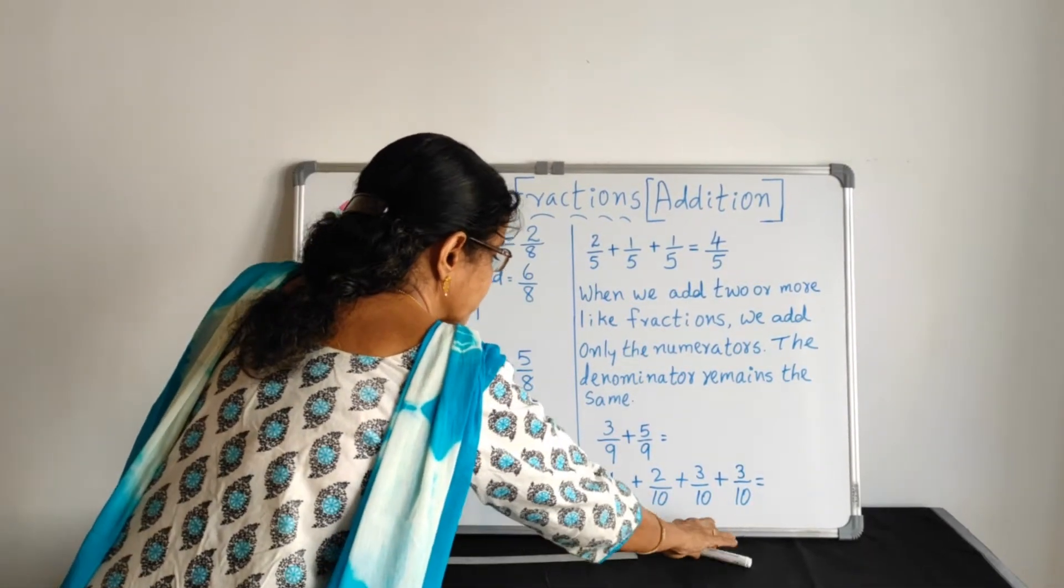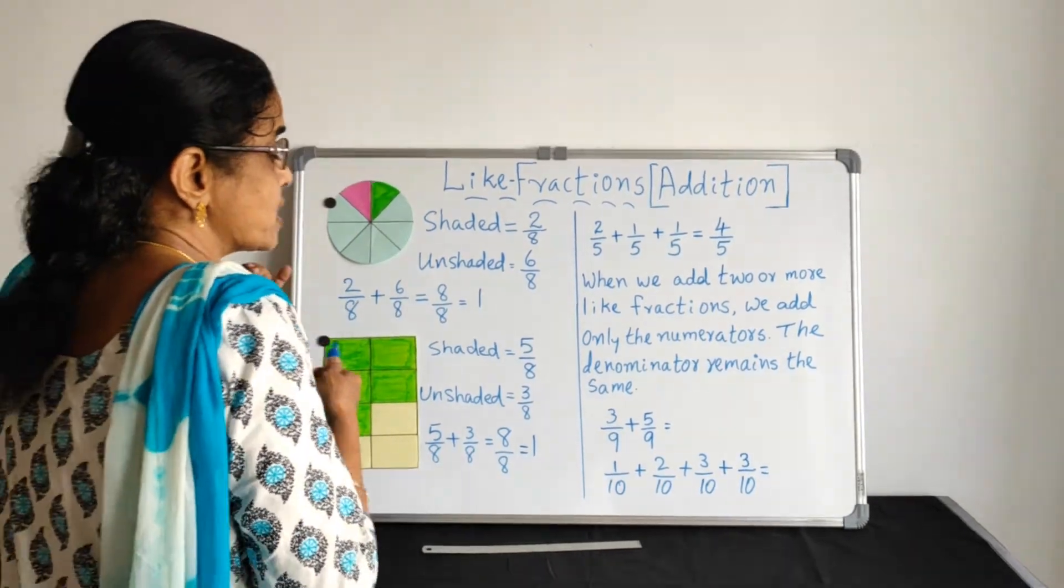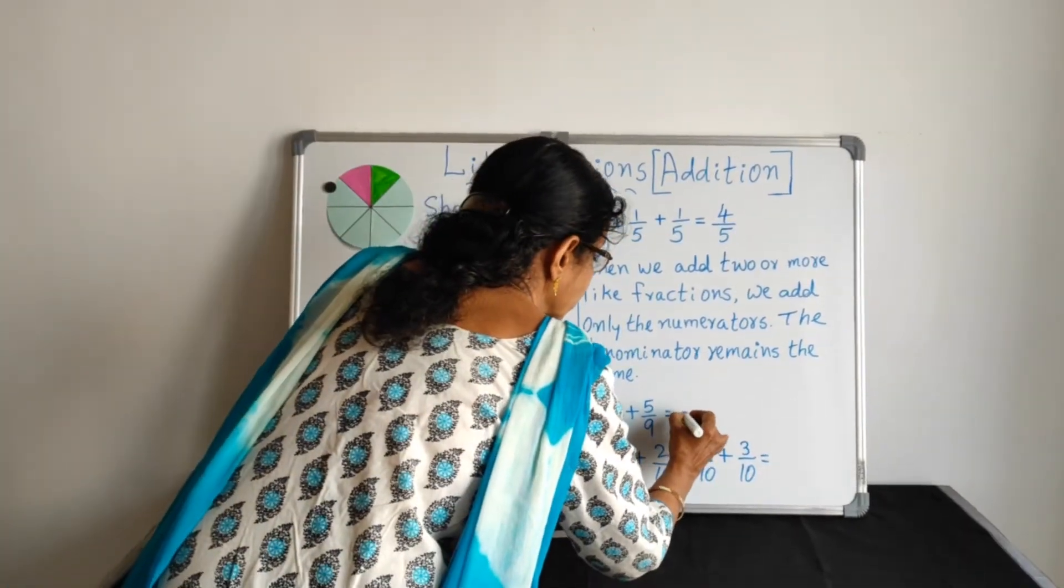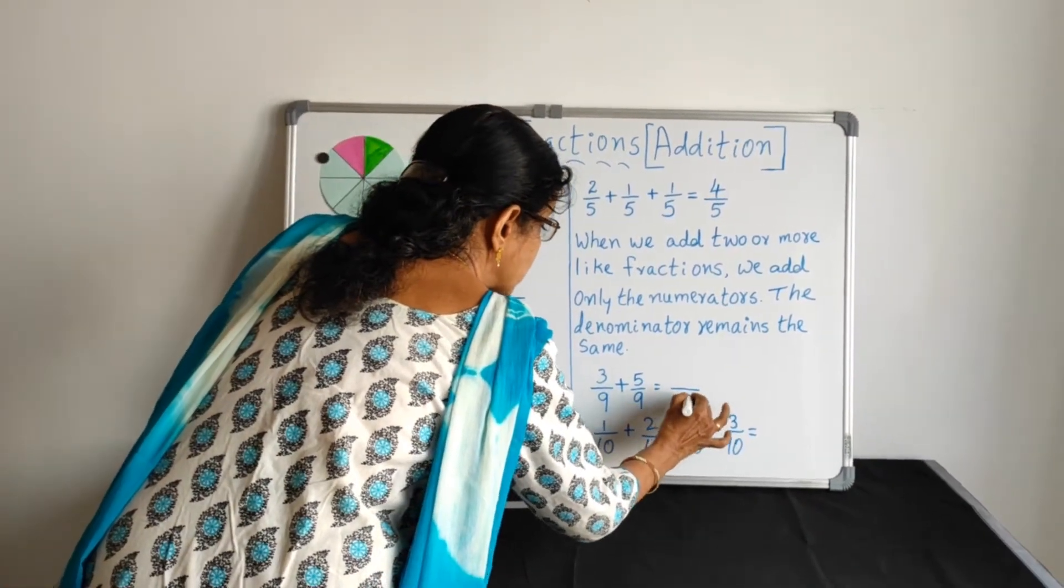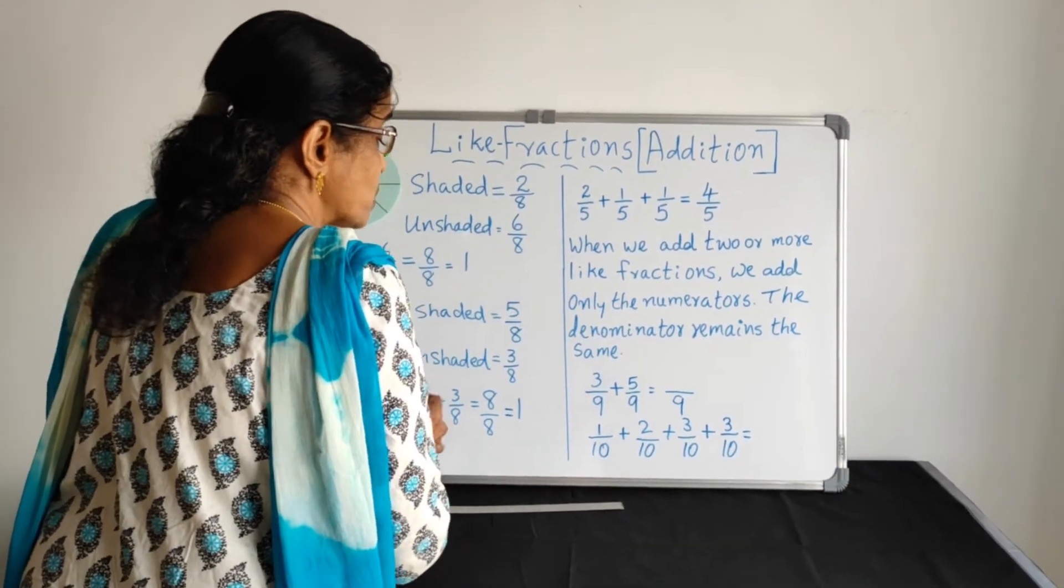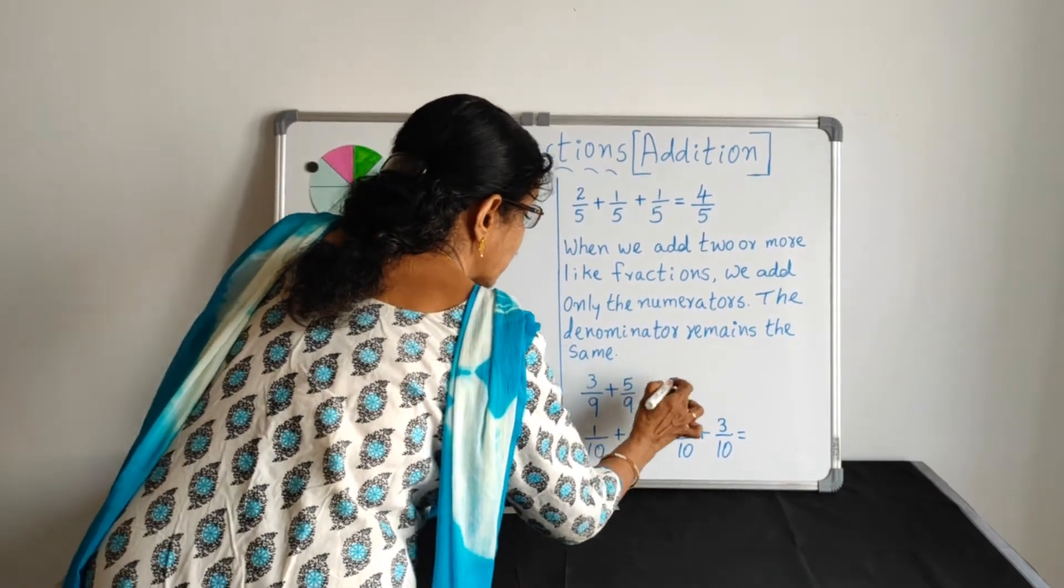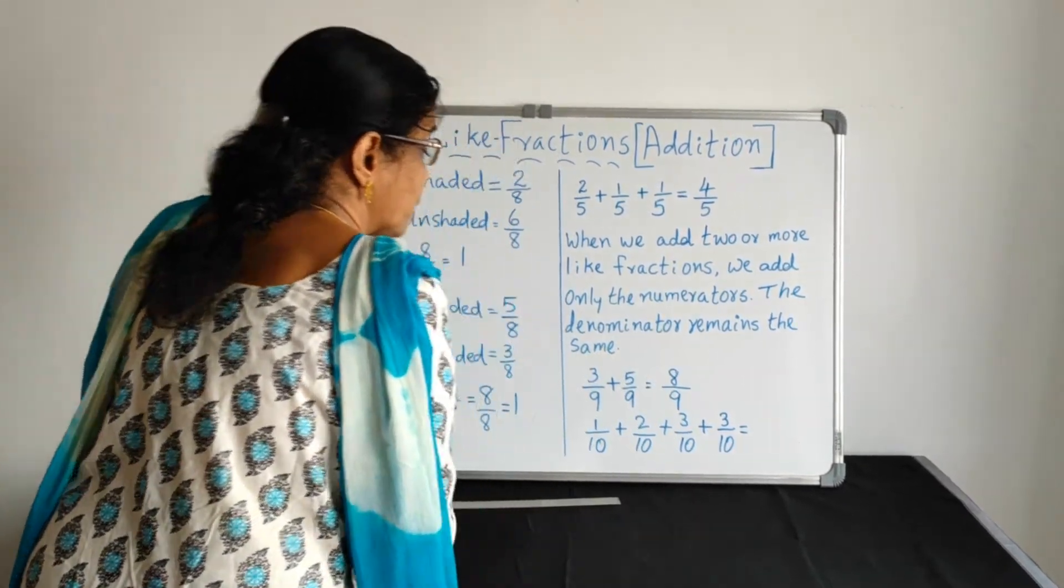Are you ready? First question. Give the answer. Denominator, no change. So what about the numerator? 3 plus 5 makes 8. 8 by 9.